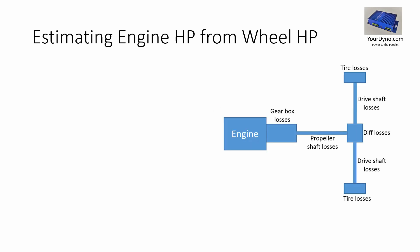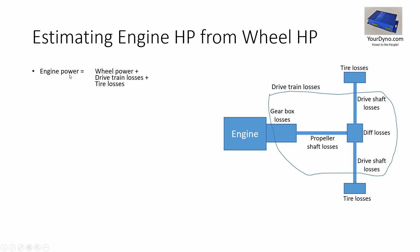So here are the various loss components. We have a bunch of things we can call drivetrain losses: that's the gearbox loss, the differential loss, and the various drive shafts. Then we have tire losses in addition, of course if you have a roller-based dyno. If you have a hub dyno, there are no tire losses. Here is a simple equation: engine power equals wheel power — which is what we measure — plus the drivetrain losses plus the tire losses.